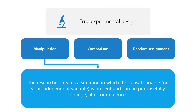Manipulation means that the researcher creates a situation in which the causal variable, or the independent variable, is present and can be purposefully changed, altered, or influenced. By creating a scenario where the causal variable is present, a causal relation is more plausible because you can establish that the change in your outcomes, or your dependent variable, was caused by the causal variable and not the other way around.